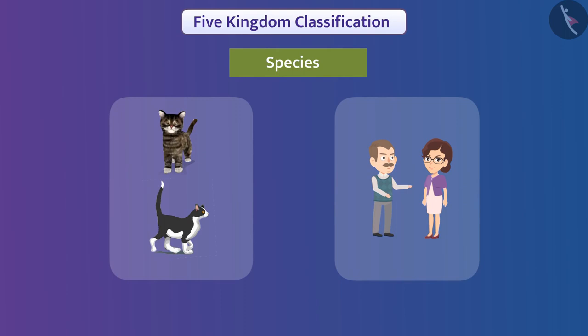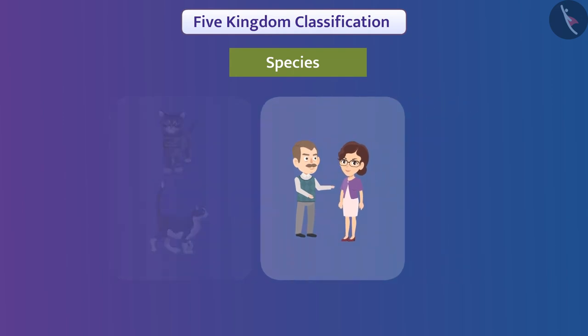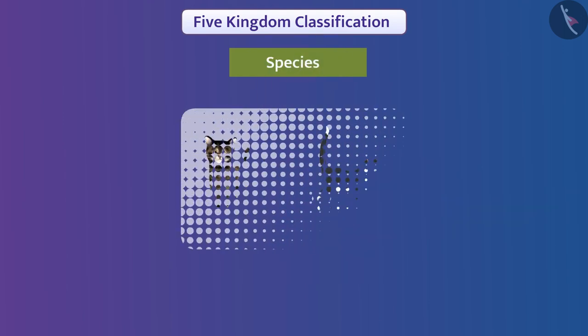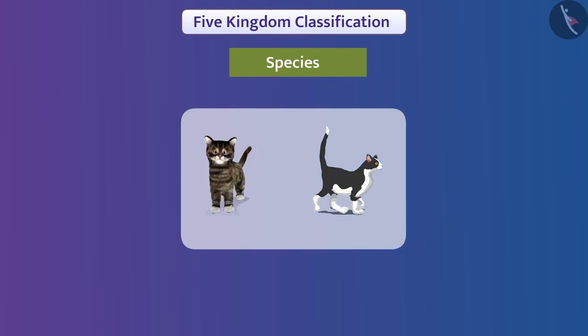Species are placed at the lowest level. Species are the group of organisms that have considerable similarities in terms of body organization and can reproduce with each other. For example, all humans come under the same species, which is called Sapiens, and this species belongs to kingdom Animalia.